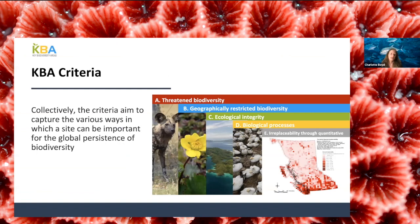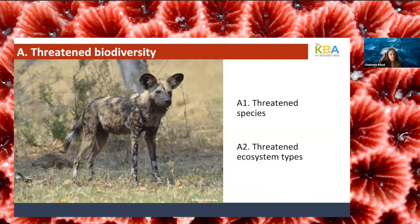Collectively, the criteria aim to capture the various ways a site can be important for global biodiversity persistence — because it holds threatened biodiversity, geographically restricted biodiversity, has outstanding ecological integrity, maintains key biological processes, or is shown to be highly irreplaceable through quantitative analysis. There are 11 criteria grouped into five high-level criteria, A through E. Sites triggering criterion A are important for globally threatened biodiversity: they hold a significant proportion of the global population of a species at risk of extinction under A1, or a significant proportion of an ecosystem type at risk of collapse under A2.